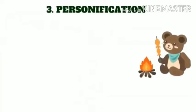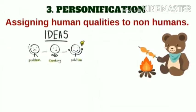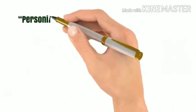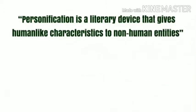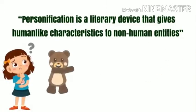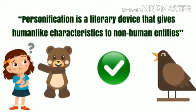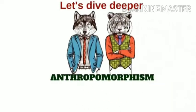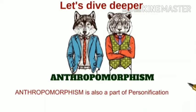Personification basically means assigning human qualities to non-humans. They may be abstract ideas, non-living things, and animals also. Personification is a literary device that gives human-like characteristics to non-human entities. There remains a common confusion that animals are already living beings — so can their walking and talking be said to be personification? The answer is yes. When animals are given human qualities, it is basically called anthropomorphism, but anthropomorphism is also a part of personification, so it can rightly be called personification.